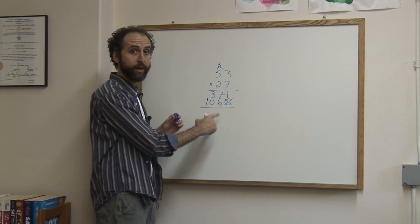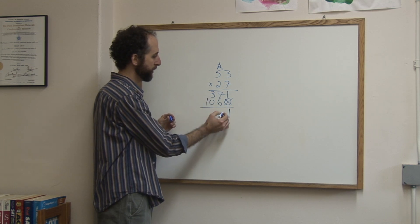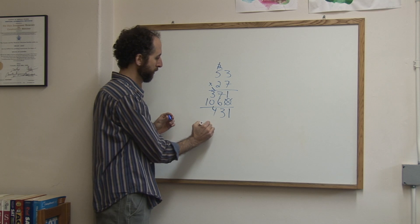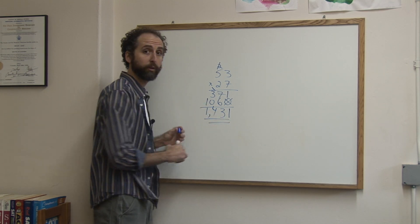Now I simply add down: 1 plus 0 is 1, 7 plus 6 is 13, carry the 1, 3 plus 1 is 4, and 1. Put the comma, and you got it.